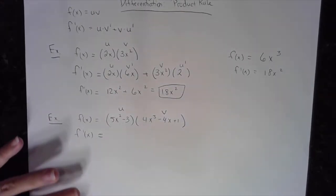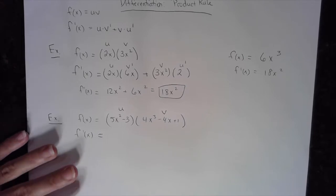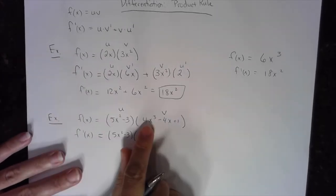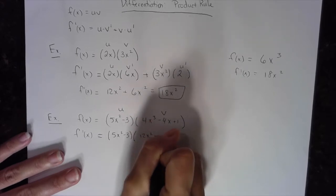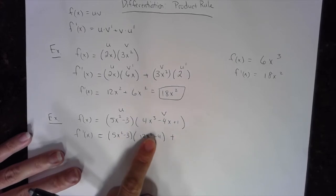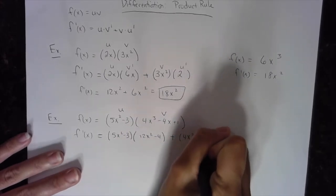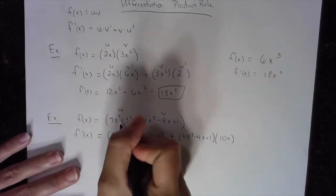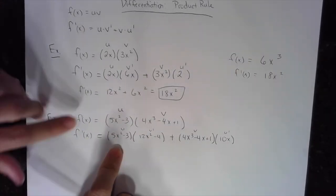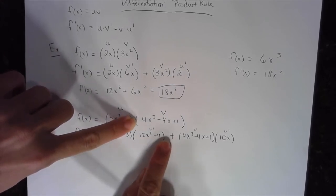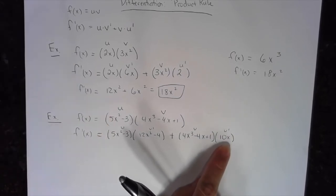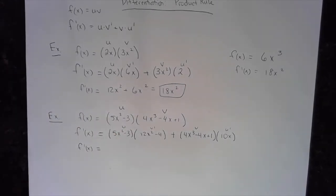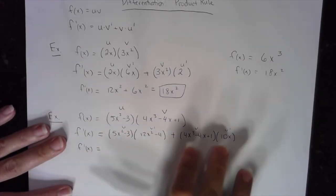So u is (5x squared minus 3) and v is (4x cubed minus 4x plus 1). We say it out loud: f prime of x equals the first — copy it down — times the derivative of the second, which is 12x squared minus 4, plus the second (4x cubed minus 4x plus 1) times the derivative of the first, which is 10x. That gives us u·v′ + v·u′. I always double-check before simplifying.